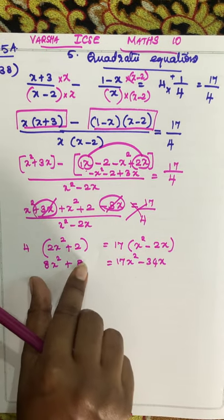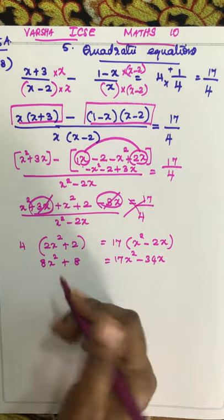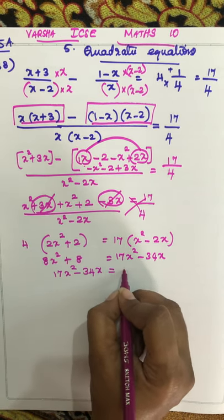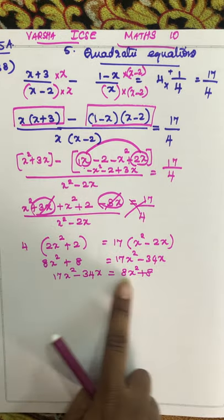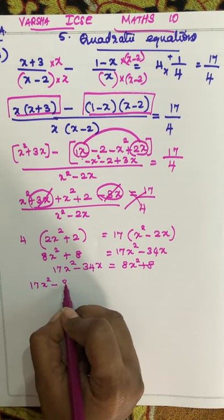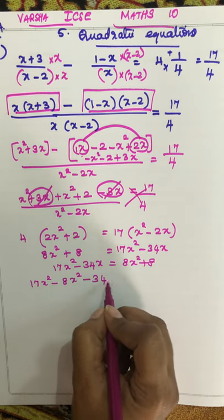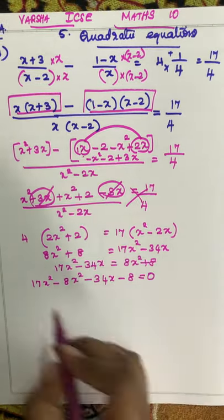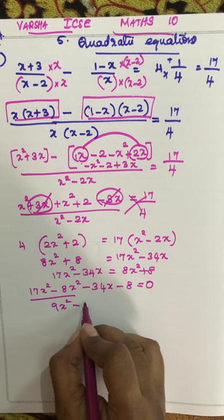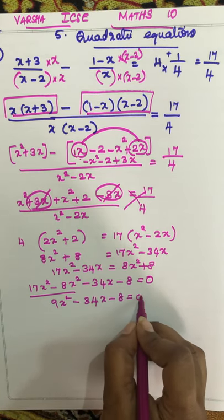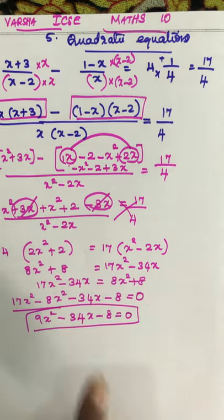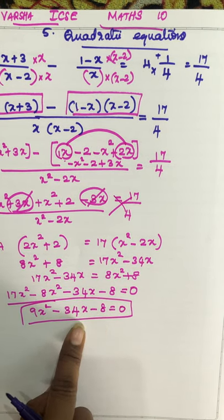You can shift this to the other side, or first interchange the places: 17x squared minus 34x plus 8. Now shift: 17x squared minus 8x squared minus 34x minus 8 equals 0. These are the only like terms, so if you subtract you get 9x squared minus 34x minus 8 equal to 0. So this is the final equation.